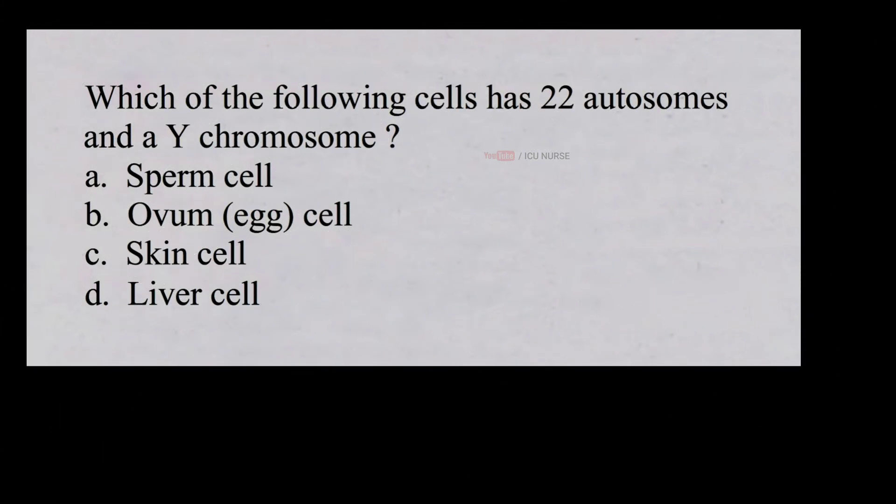Which of the following cells has 22 autosomes and a Y chromosome? a. Sperm cell, b. Ovum cell, c. Skin cell, d. Liver cell. And the correct answer is a. Sperm cell.